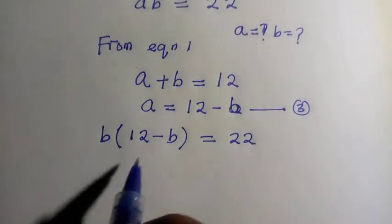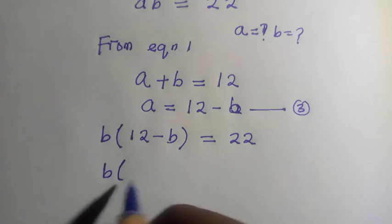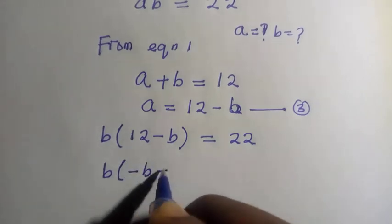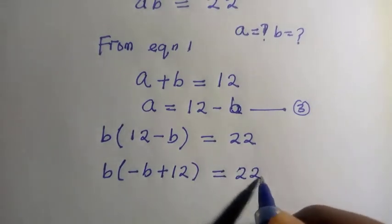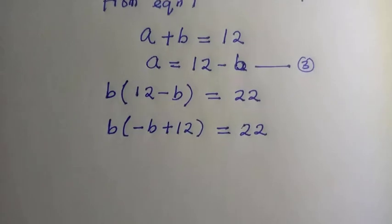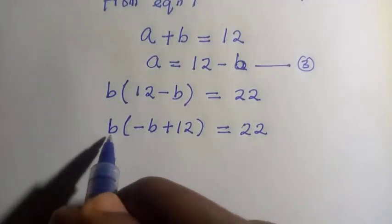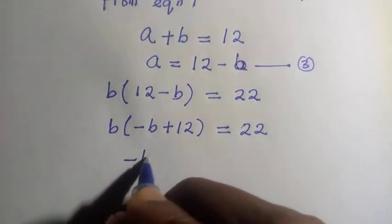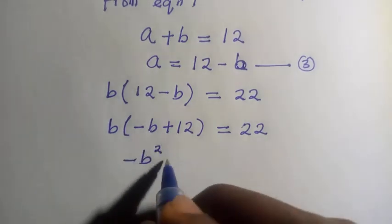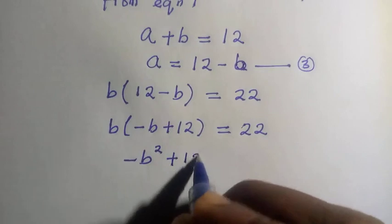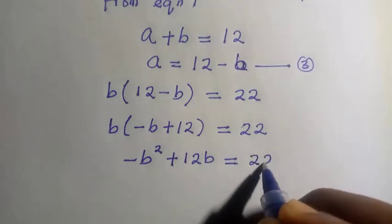Let's rearrange this so that we have B into bracket of minus B plus 12 equals 22. Now let's expand this. When we multiply B by B we have minus B squared, then B multiplied by 12 gives us plus 12B. Everything equals 22.